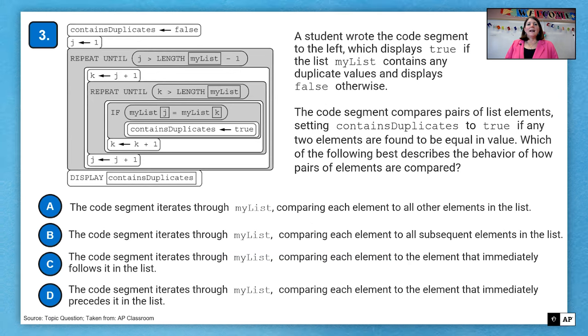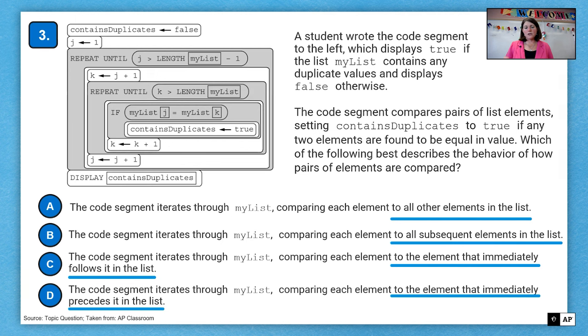Question number three. A student wrote the code segment to the left, which displays true if the list mylist contains any duplicate values and displays false otherwise. The code segment compares pairs of list elements setting contains duplicates to true if any two elements are found to be equal in value. Which of the following best describes the behavior of how pairs of elements are compared? So notice the code here. We have two repeats. We have two variables, J and K.